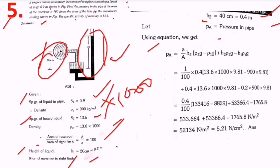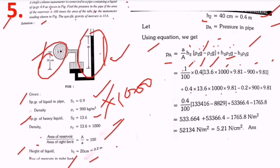Using the single column manometer equation: pa equals (small a / capital A) times h2 times rho two times g, minus rho one times g, plus h2 times rho two times g, minus h1 times rho one times g. Here small a / A equals 1/100. Substituting: h2 is 0.4, rho two is 13,600, g is 9.81; h1 is 0.2, rho one is 900, g is 9.81.